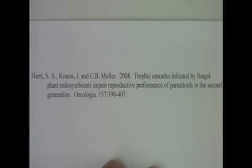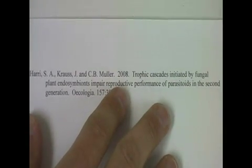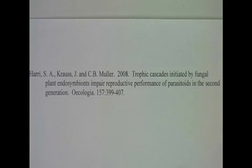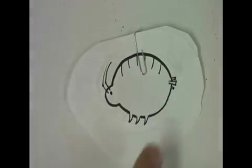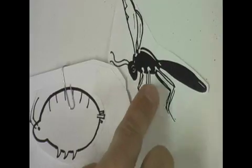These bottom-up effects were studied in 2008 in a paper in Ecologia by Harry et al., in which they looked at a poisonous fungus that grows inside of grass. The grass is then eaten by an aphid, which is then parasitized by a wasp.